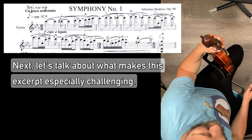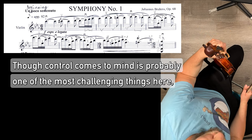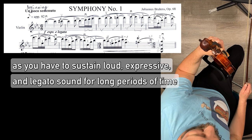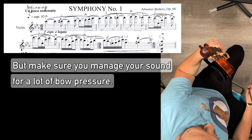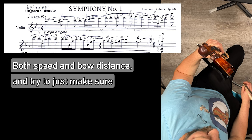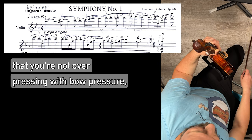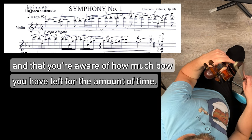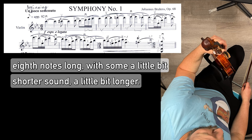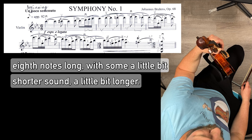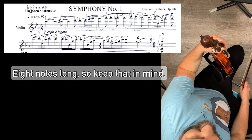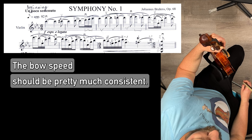Let's talk about what makes this excerpt especially challenging. Bow control comes to mind as probably one of the most challenging things here. As you have to sustain loud, expressive and legato sound for long periods of time with very slow bow. Make sure you manage your sound formula of bow pressure, bow speed and bow distance. And try to just make sure that you're not over pressing with bow pressure and that you're aware of how much bow you have left for the amount of time. Most of the bows are going to be about five eighth notes long, with some a little bit shorter, some a little bit longer. So keep that in mind. The bow speed should be pretty much consistent.